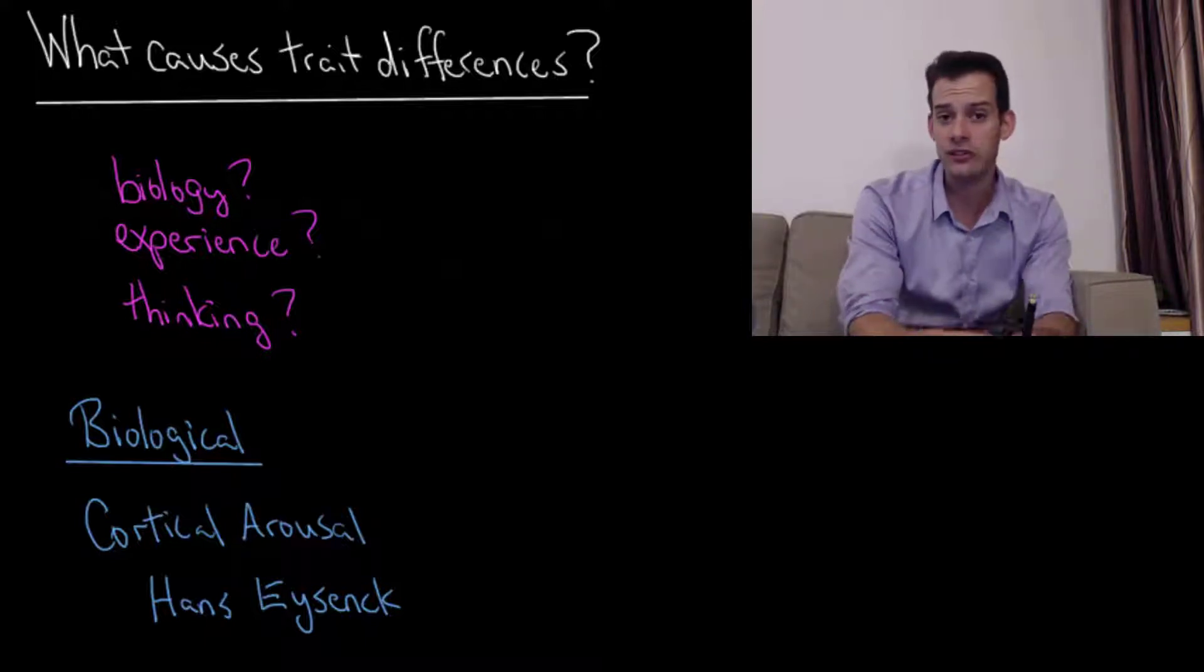So in this video we're going to start looking at what might be causing trait differences between people. And we'll start with a biological approach to thinking about this. And this first example comes from Hans Eysenck, who you might recall initially proposed a two-dimension way of thinking about personality, just looking at extraversion and neuroticism.